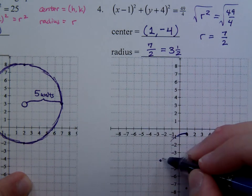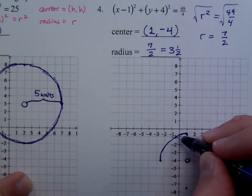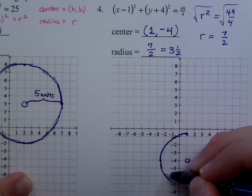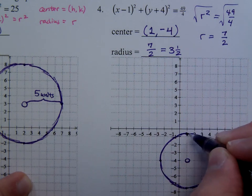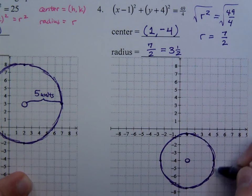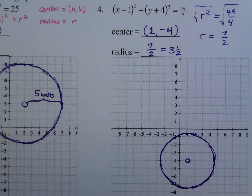Alright, so you just connect the points. Do your best, again, to make a nice, smooth circle. And there you go. There's a circle with a center at 1, negative 4, with a radius of 3 and a half. Alright, so we'll see you next time.